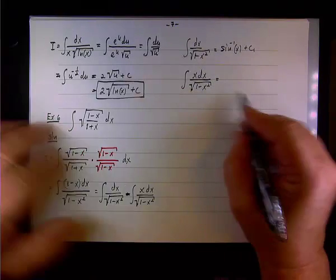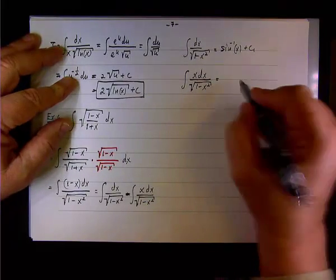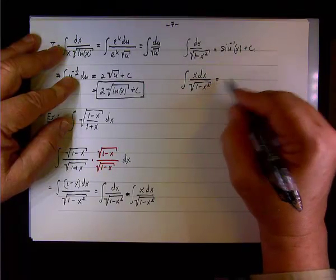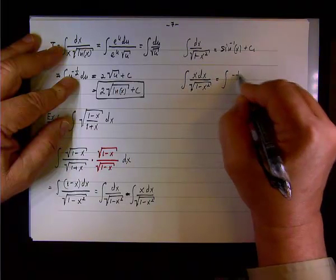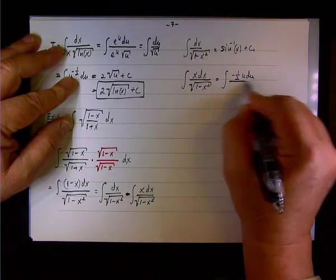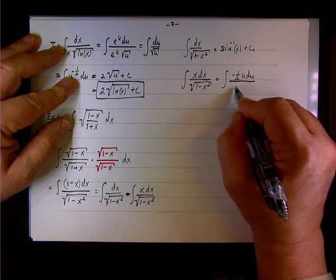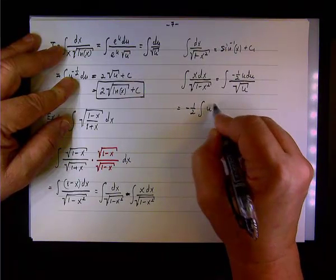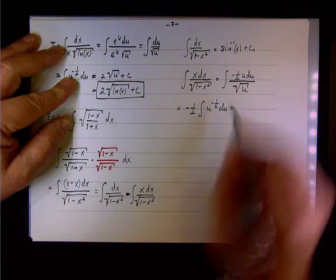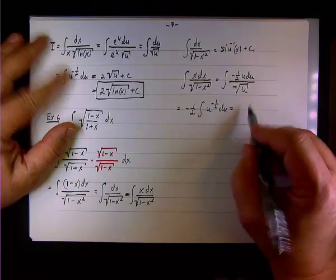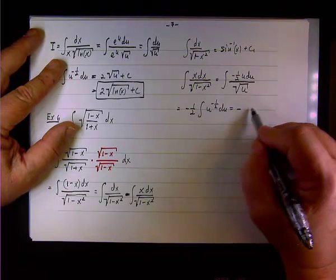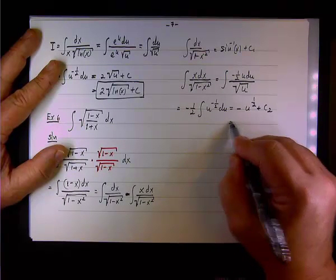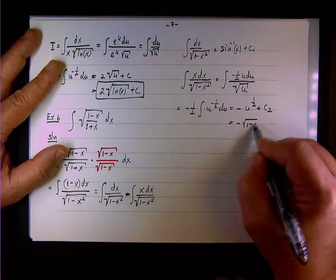For the second integral, x dx over square root of (1 minus x squared), let u equal 1 minus x squared. Then du equals negative 2x dx, so x dx equals negative one-half du, and the denominator becomes square root of u. This gives negative one-half times the integral of u to the negative one-half du, whose antiderivative is negative u to the one-half plus c2.